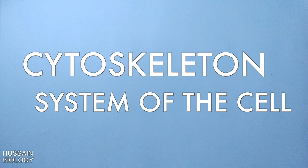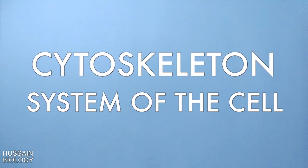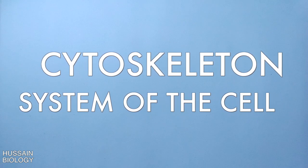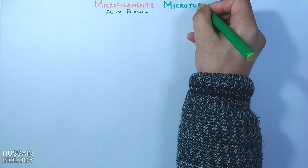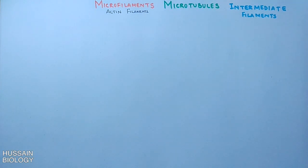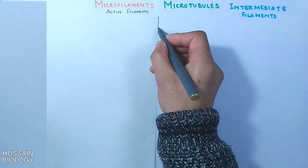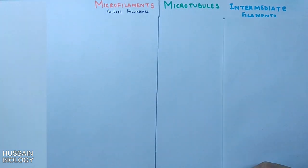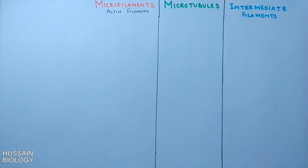In this series of videos we will be discussing the cytoskeleton system of the cell. In this video we will be discussing the differences between microfilaments, microtubules, and intermediate filaments. These are the main three components of the cytoskeleton system of the cell.